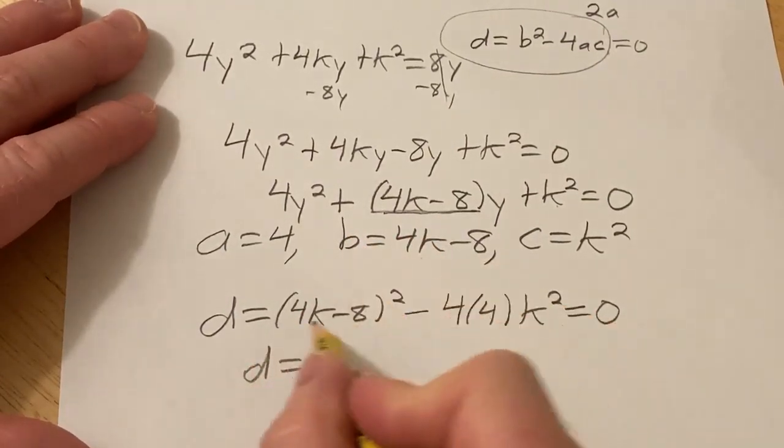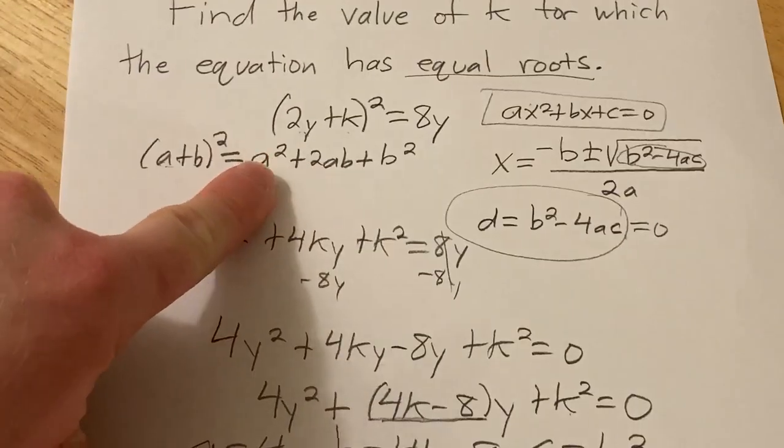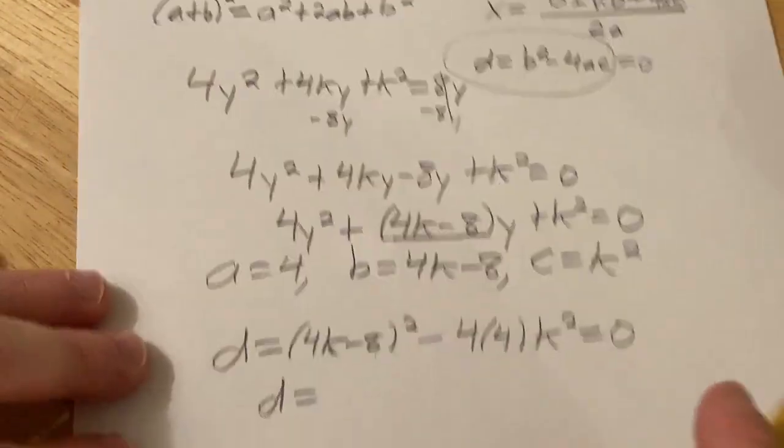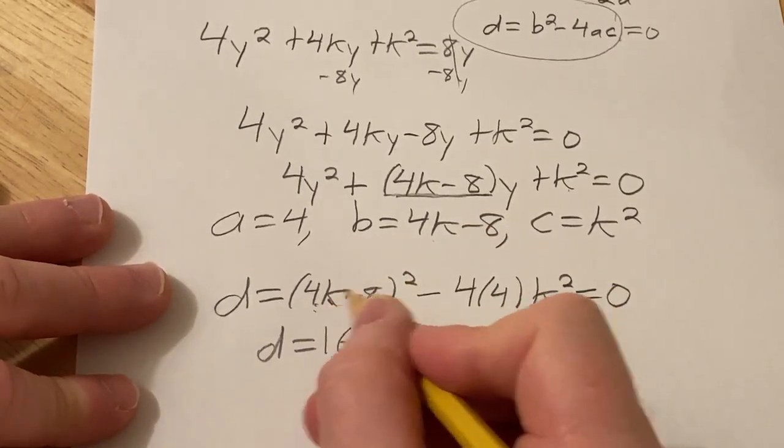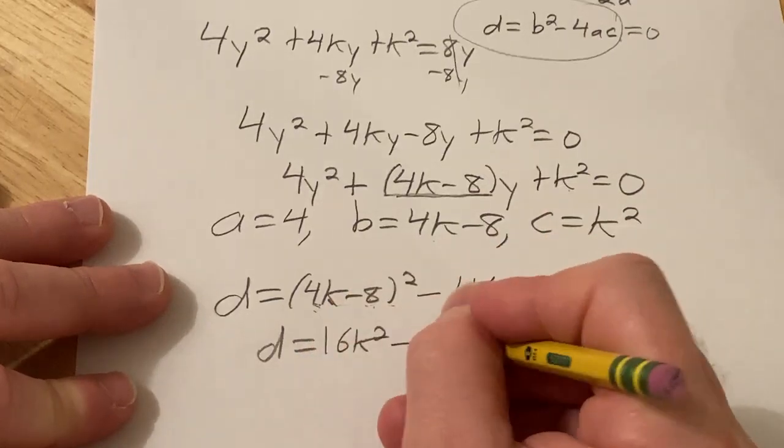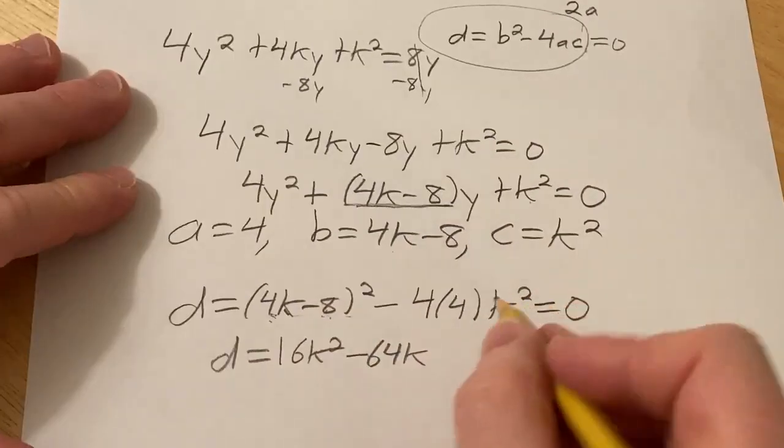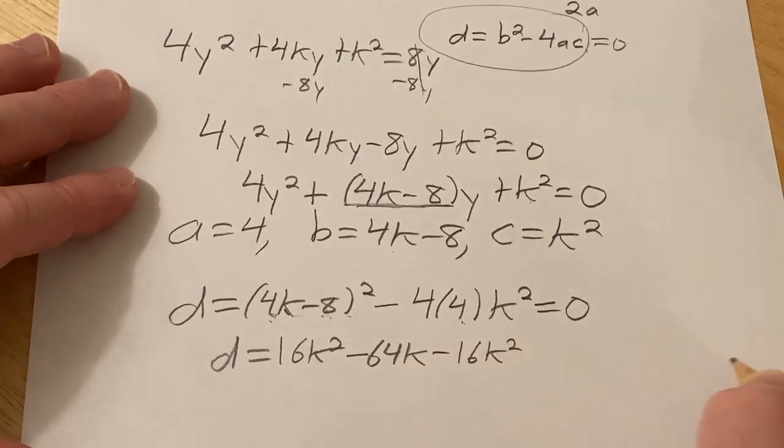So this is going to be d equals, we can multiply this out using a similar formula as the one above, except we have a minus in the formula. So square the first one, multiply these and double them, so 32k times 2 is 64k, and then here we have minus 16k².